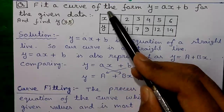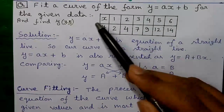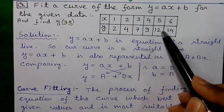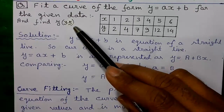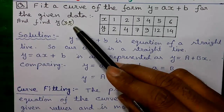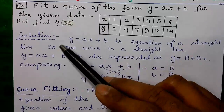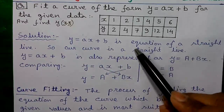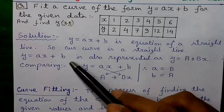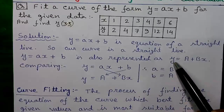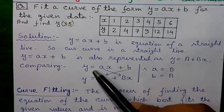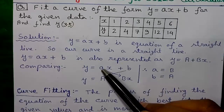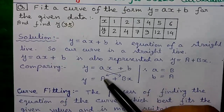Our question is: fit a curve of the form Y = AX + B for the given data, where some values of X and corresponding values of Y are given, and also find out Y(3.5) — that means find the value of Y when X = 3.5. Now, Y = AX + B is the equation of a straight line, and it is also represented as Y = A + BX. Comparing both representations, small a equals capital B and small b equals capital A.